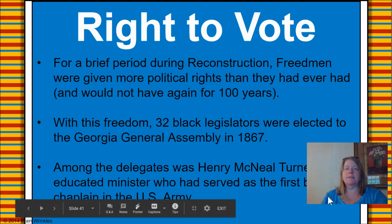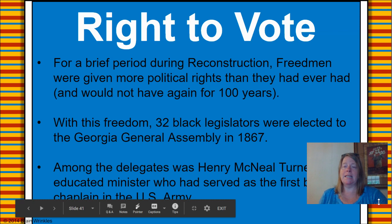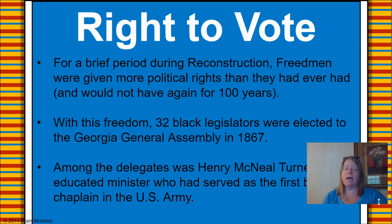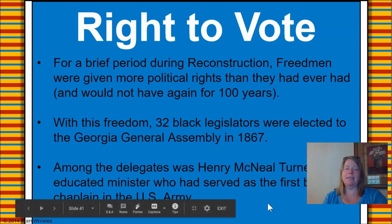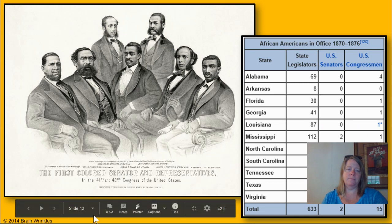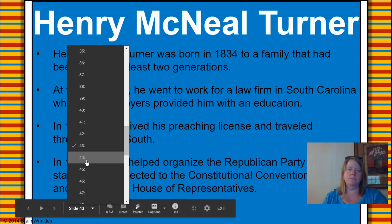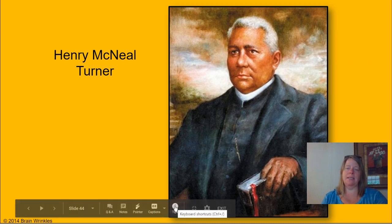On slide 41, we're going to talk about the right to vote. For a brief period during Reconstruction, freedmen were given more political rights than they had ever had and would not have again for a hundred years. With this freedom, 32 Black legislators were elected to the Georgia General Assembly in 1867. Among the delegates was Henry McNeil Turner, an educated minister who had served as the first Black chaplain in the U.S. Army. Here's an image of him — it's actually a drawing.